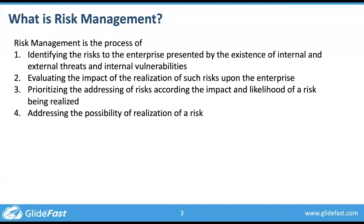Risk management is basically a set of processes where we do four different things. We try to identify risks to the enterprise that come about because we're using IT, we're using people, and anytime that happens we have internal vulnerabilities subject to internal and external threats. Risk is the process of identifying what needs to be done to prevent things from happening. As we identify those risks, we evaluate the impact of what that risk means to the enterprise — impact can be something as subjective as high or low.